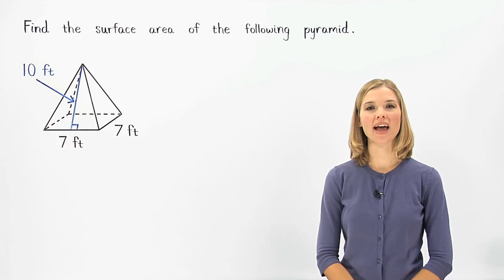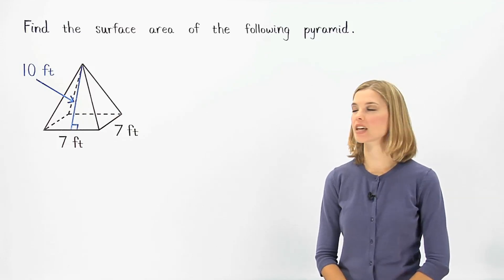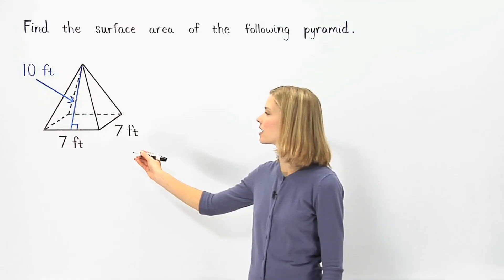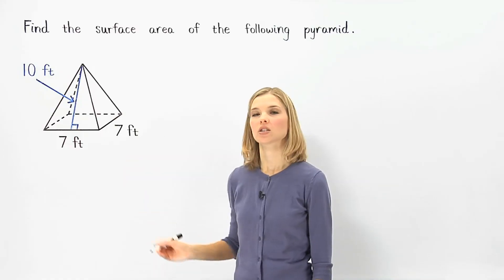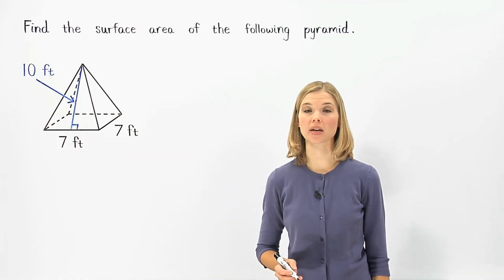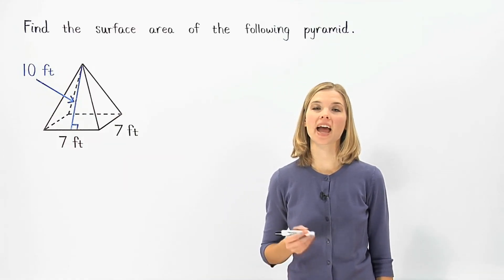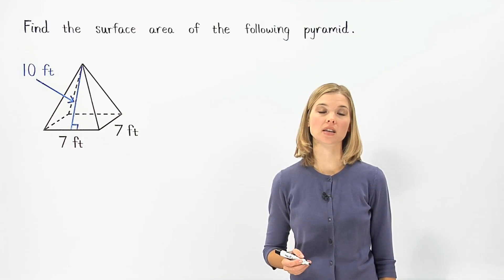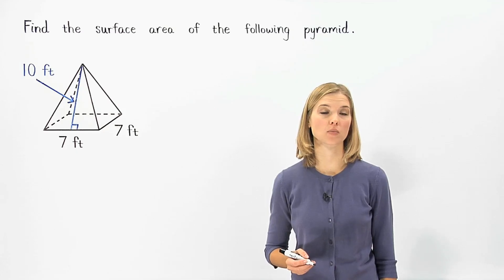In this example, we're asked to find the surface area of the given pyramid. To find the surface area of a pyramid, we simply add the areas of the faces of the pyramid.